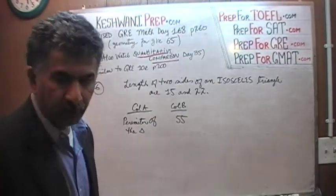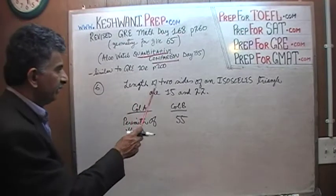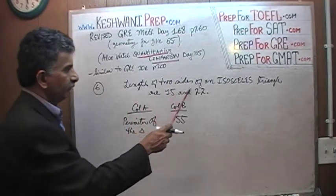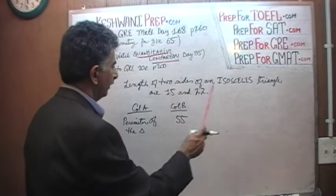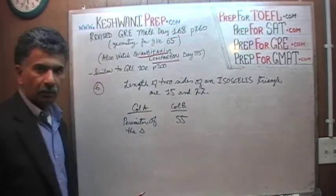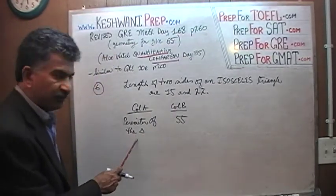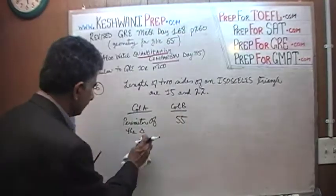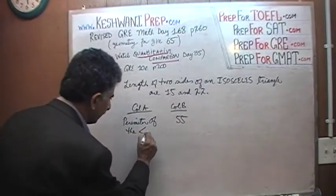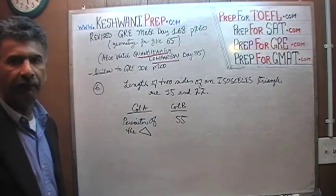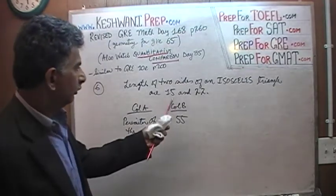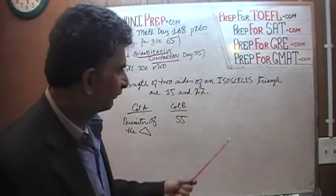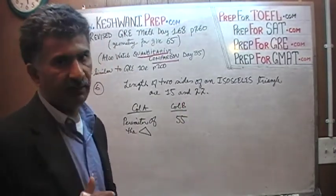One more time: all we are told is that the length of two sides of an isosceles triangle are 15 and 22. The question is simply how does the perimeter of the triangle compare with 55? We know the two sides are 15 and 22, and we know it has to be an isosceles triangle, which means two of the sides are equal.